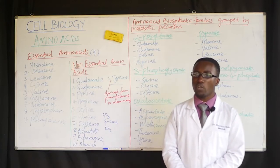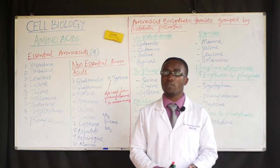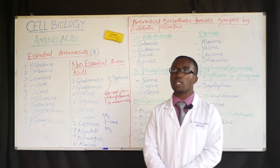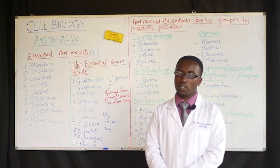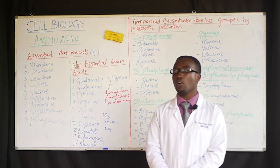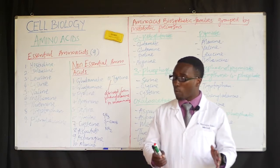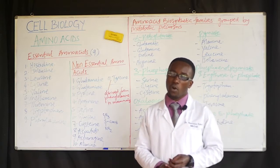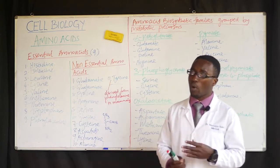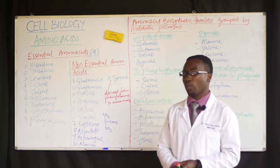The nine essential amino acids include histidine, isoleucine, leucine, lysine, valine, methionine, threonine, tryptophan, and phenylalanine. These amino acids mainly come from the diet; rarely are they synthesized in our bodies. When they are synthesized, it is through a series of energy-consuming reactions.